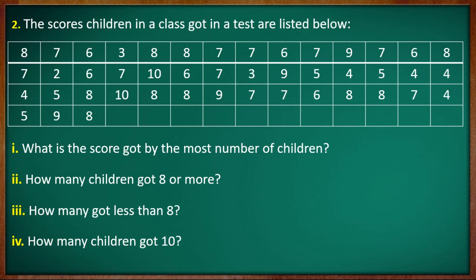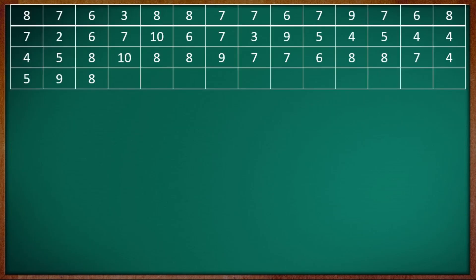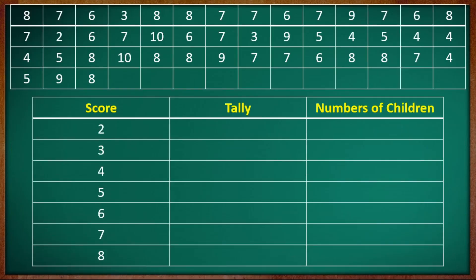Now the book activities. The scores children in a class got in the test are listed below — one exam is marked and written. Questions: what is the score got by the most number of children? How many children got 8 or more? How many got less than 8? How many children got 10? We set up a table with score, tally, and number of children columns.